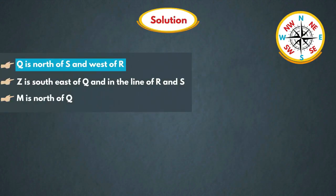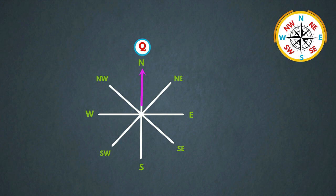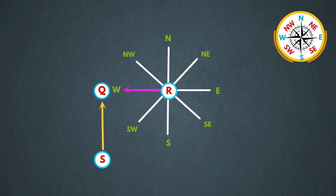Let's draw the diagram based on the information. In the statement they given that Q is north of S and west of R. Here this is Q and it is north of S and west of R.